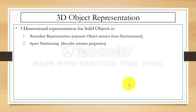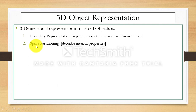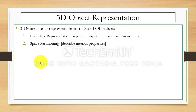We have three-dimensional representation of objects. Here we are using three-dimensional representation for solid objects. We can use either boundary representation or space partitioning. In boundary representation we can separate the object interior, and in space partitioning we can describe the interior properties of any object. So we have two methods for the representation of solid objects: boundary representation and space partitioning.